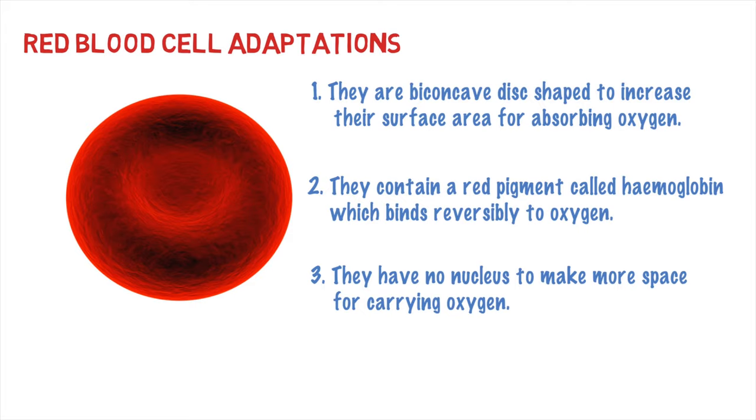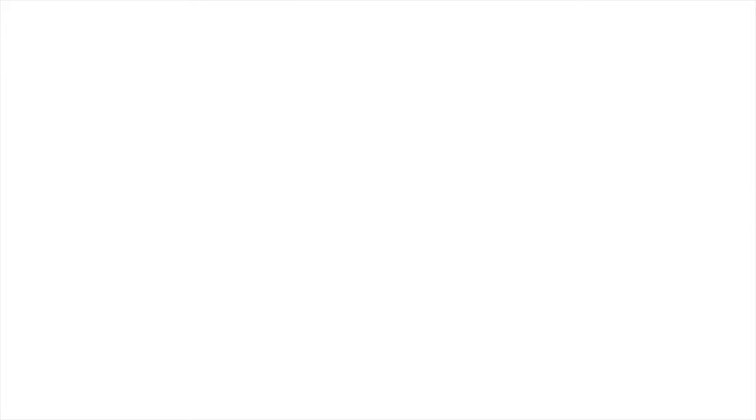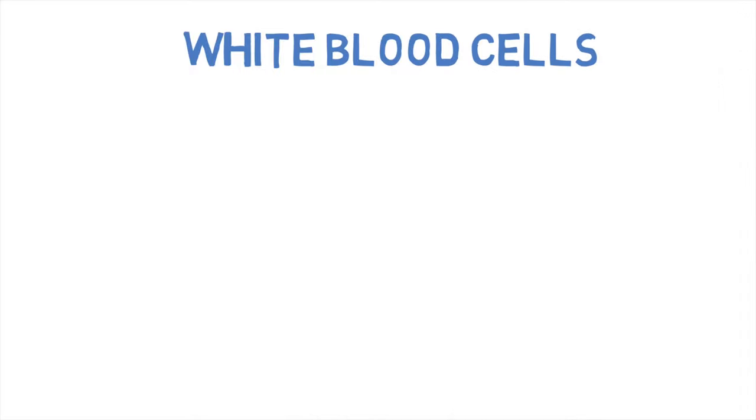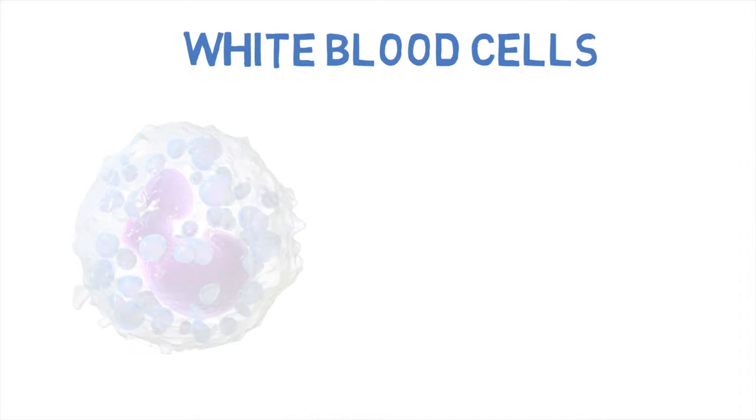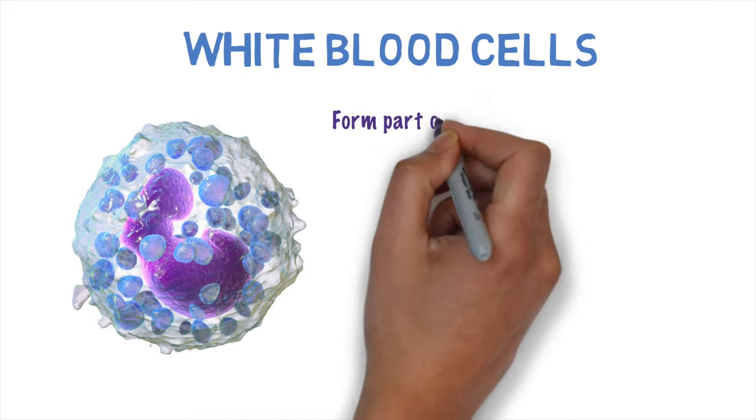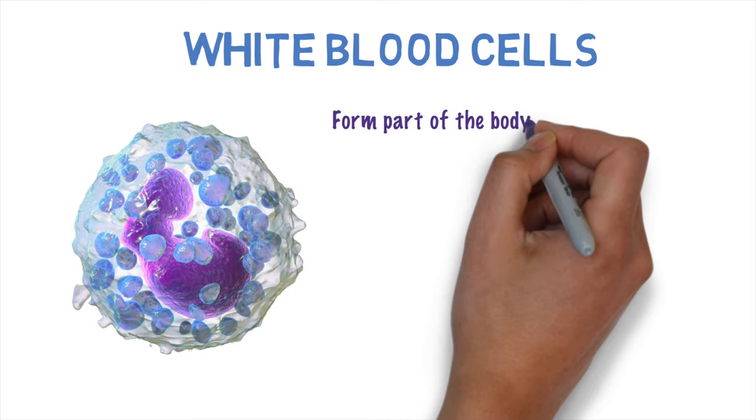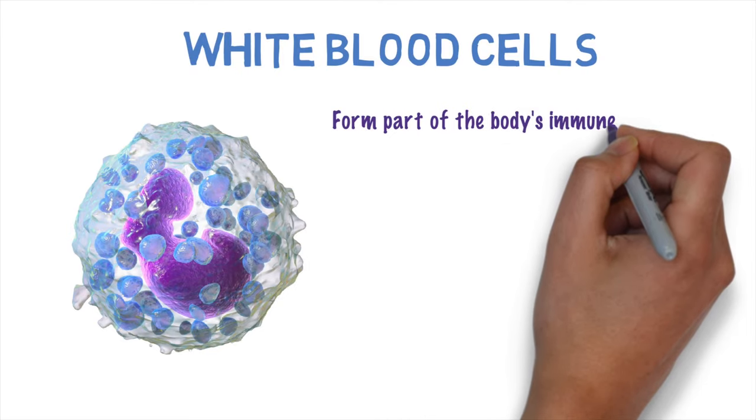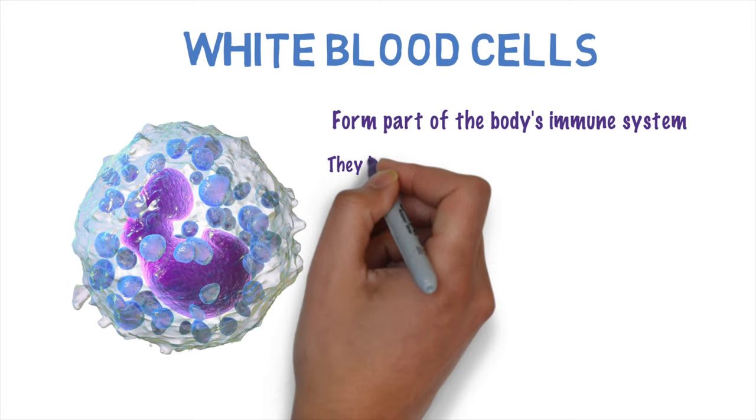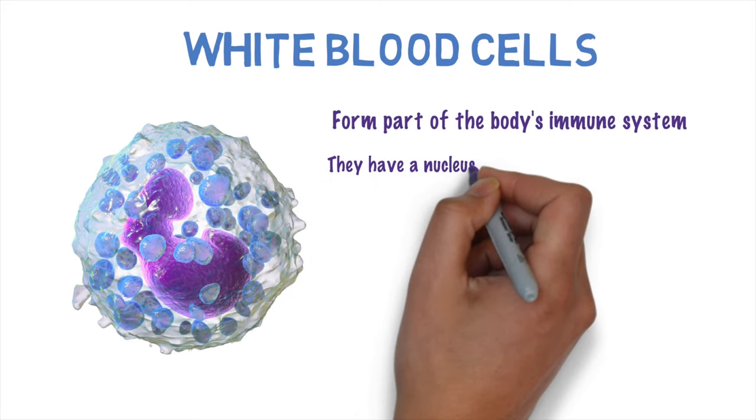The next type of blood cell is a lot bigger than the red blood cell. It's a white blood cell, and these are involved in fighting off pathogens, so bacteria or viruses. They form part of our body's immune system. So they have a nucleus, unlike the red blood cell, and the nucleus is important. They're also a lot larger than the red blood cells.